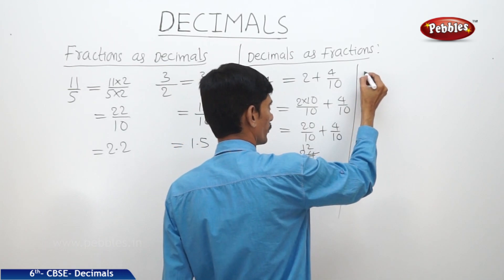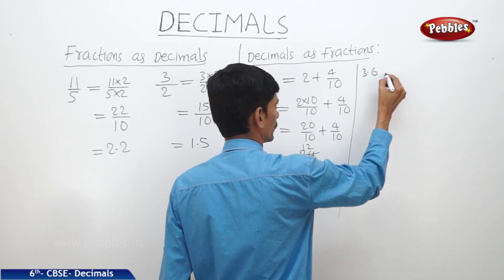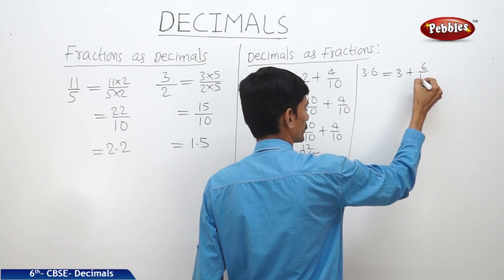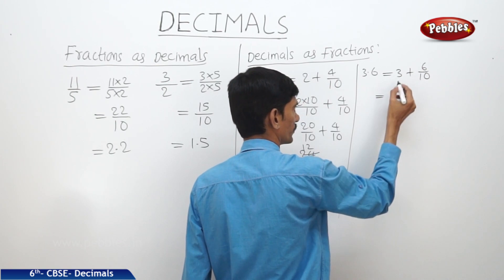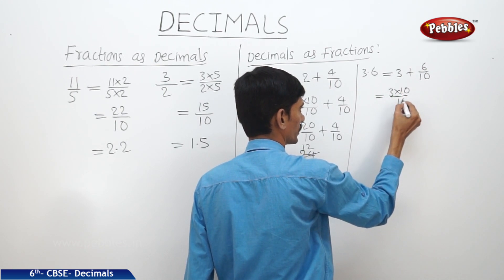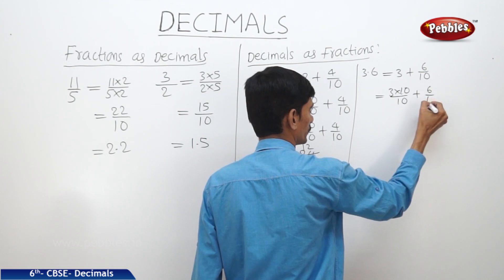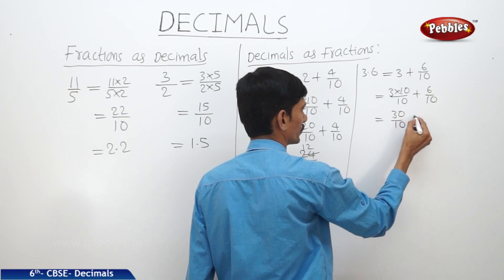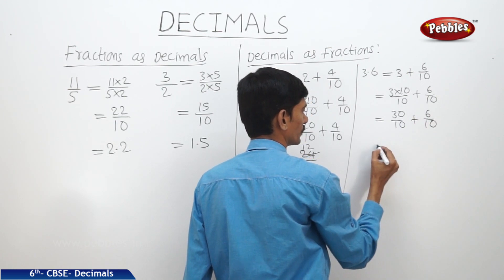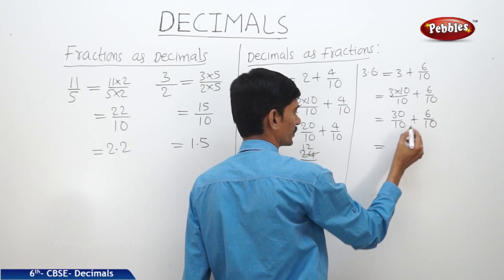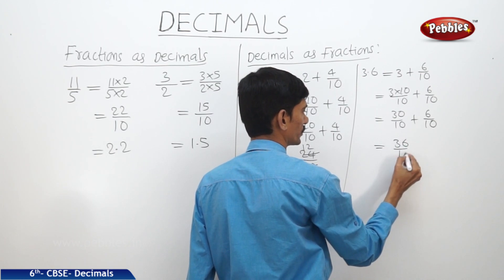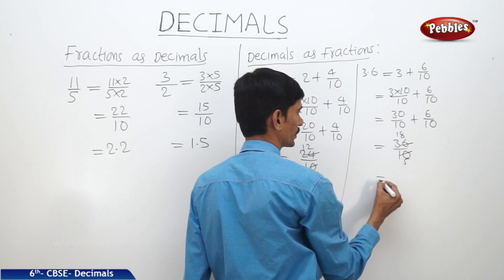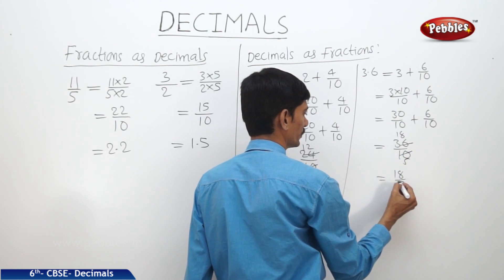Next, let us convert three point six into a fraction. Three point six equals three plus six by ten, which equals thirty by ten plus six by ten, giving thirty-six by ten. Simplifying, we get eighteen by five.